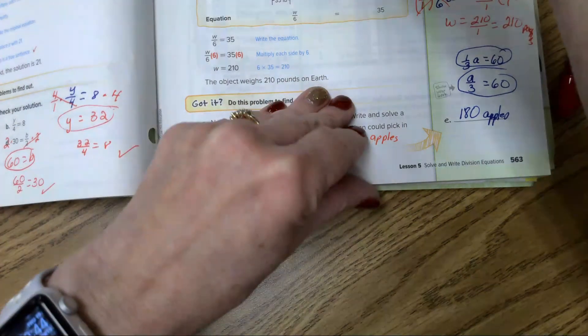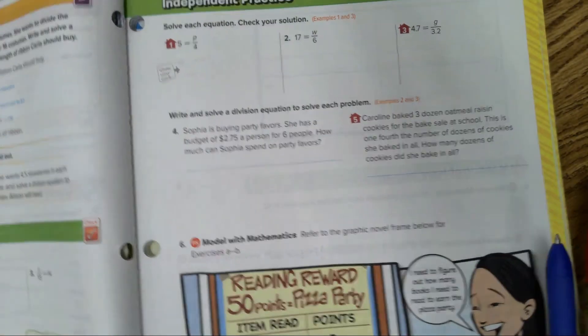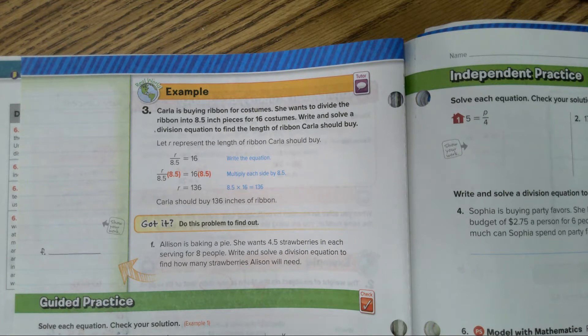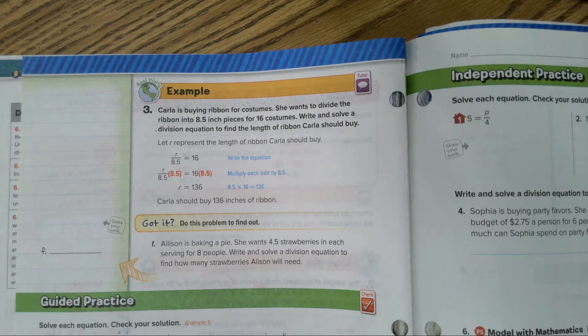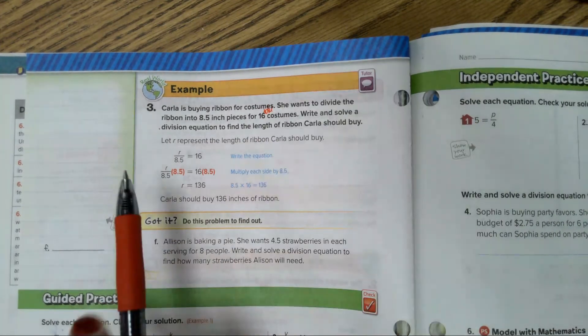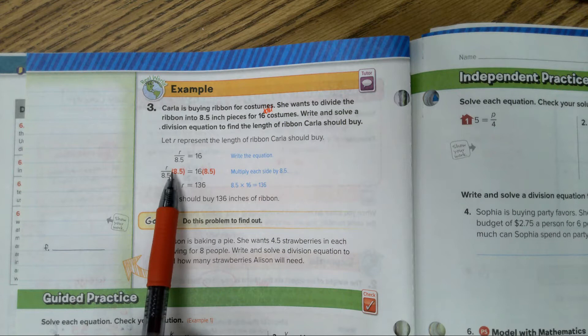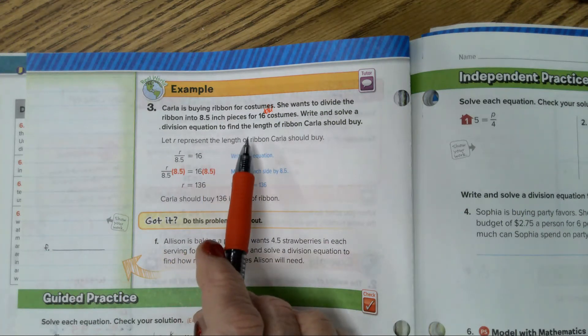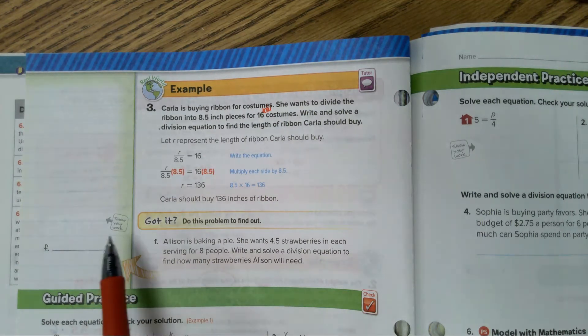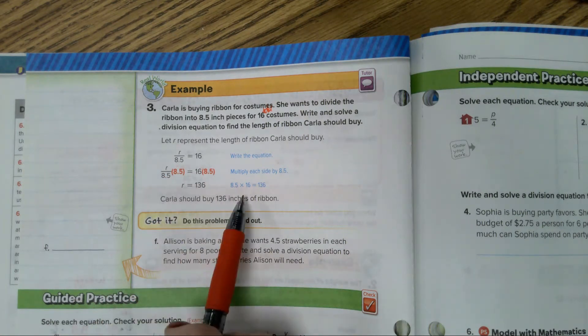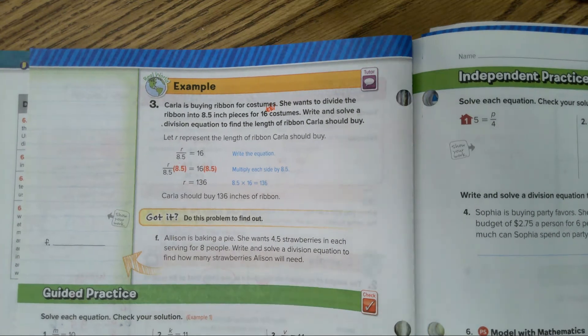Let's go to page 564. In page 564, we have another example. It says, Carla is buying ribbon for costumes. She wants to divide the ribbon into 8.5 inch pieces for 16 costumes. Write and solve a division equation to find the length of ribbon Carla should buy. Well, this is the total, 16. And each one requires 8.5, or she wants to take the ribbon and divide it by 8.5 inches. So, how much ribbon should she buy? To undo dividing by 8.5, multiply both sides of the equation by 8 and 5 tenths. And when you do that, you get 136. Carla should buy 136 inches of ribbon.